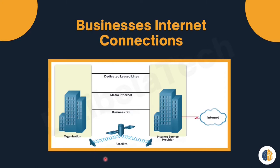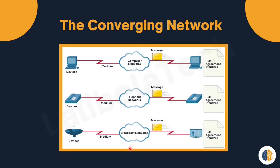The fourth one is satellite. Satellite service can provide a connection when a wired solution is not available, just like home and small office internet connections. Next we will discuss converging networks. Traditional networks use separate networks for different purposes — for example, one network for data, one network for voice, and another network for video, using three separate networks.